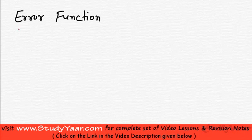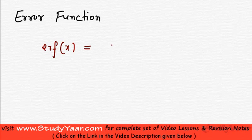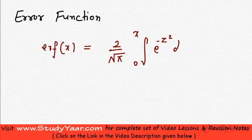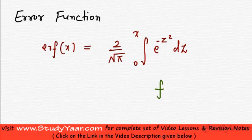Let's learn about what is an error function. Your error function, written as erf(x), is defined as equal to 2 upon root pi, integral from 0 to x, e raised to power minus z squared dz. Since you have limits from 0 to x, when you solve this, you are going to get a function of x.